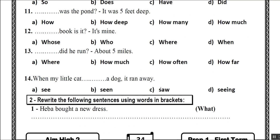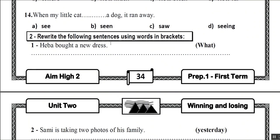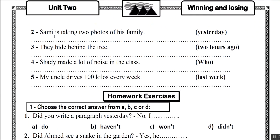Rewrite: Hiba bought a new dress. What did Hiba buy? Sammy is taking two photos of his family yesterday. Sammy took two photos of his family yesterday. They hide behind the tree two hours ago. They hid behind the tree two hours ago.